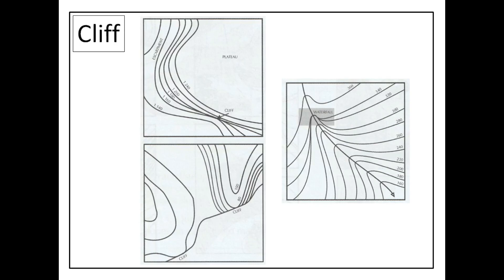Our last physical feature is a cliff — a vertical drop where the contour lines touch. In the first example, about three contour lines touch, showing a vertical drop. This is also an example of a plateau where the escarpment rises vertically. The second example is a sea cliff — a vertical drop straight into the ocean. The third example shows a waterfall: two contour lines touch indicating a vertical drop, and the contour lines also point toward the origin of the river flowing downward.